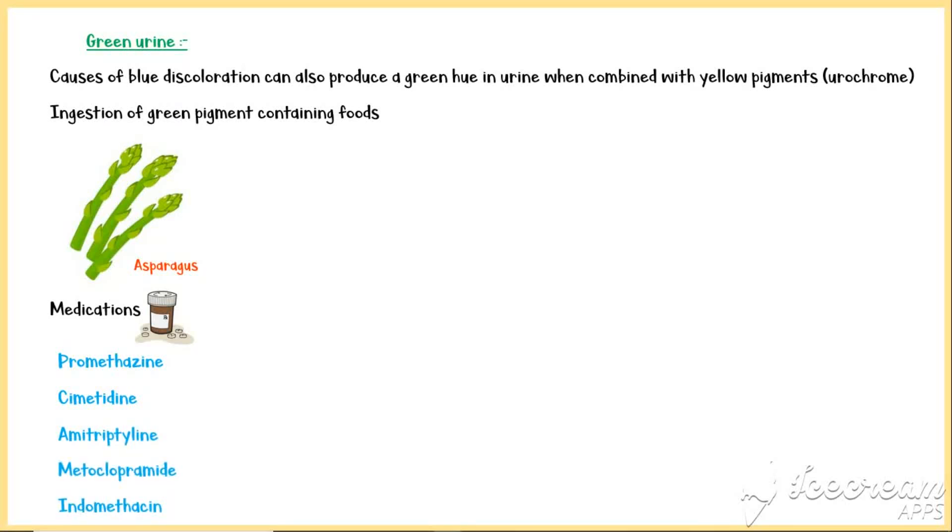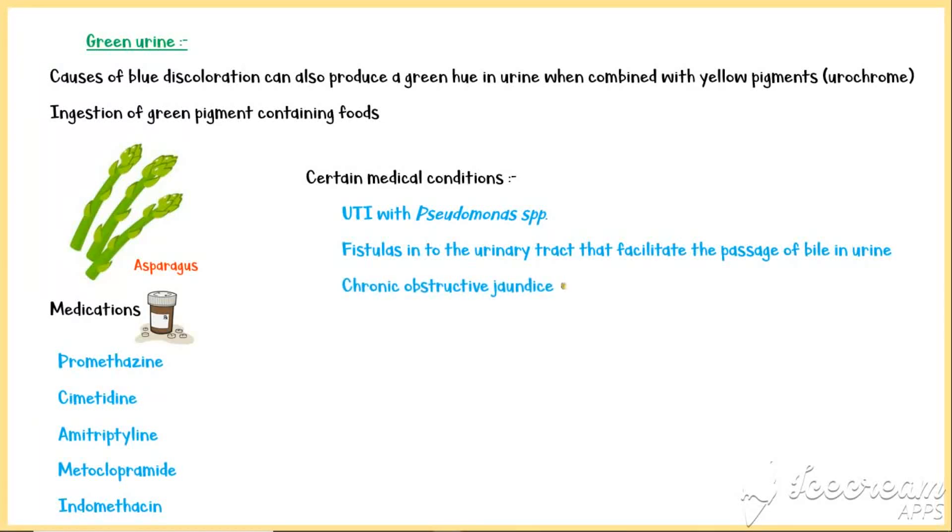Certain medical conditions can also cause greenish urine, especially urinary tract infections with pseudomonas species. Fistulas into the urinary tract that facilitate the passage of bile in urine can also give a green hue to the urine. And in chronic obstructive jaundice, biliverdin, which is the oxidative product of bilirubin, gives a green color to urine.